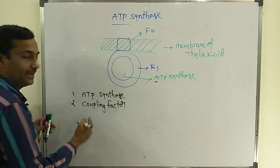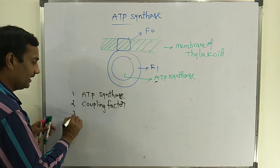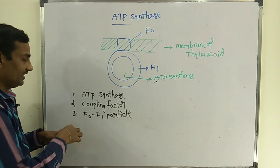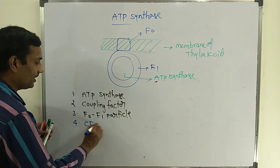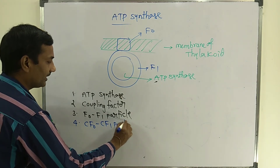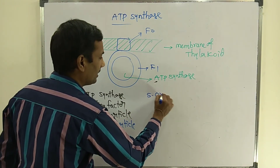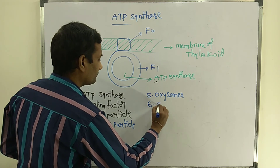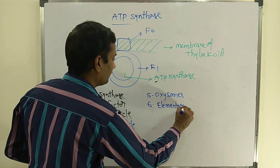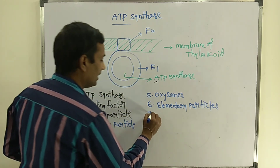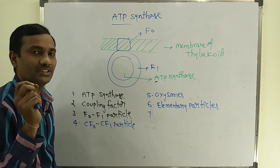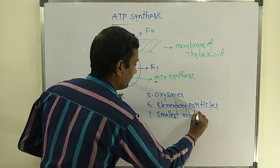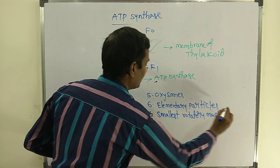There are different names for this F0, F1 particle: coupling factor, F0, F1 particle, or CF0, CF1 particle. They are also called oxysomes, or elementary particles. They are also known as the smallest rotatory machines in the universe — they are very small in size, the smallest rotatory machines in the universe — because this total structure rotates while passing the protons.